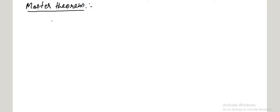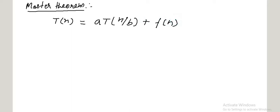If a recurrence relation is in this form — T(n) = aT(n/b) + f(n) — we first have to calculate n raised to power log base B of A. Then we compare this n^(log_B A) with the function f(n).